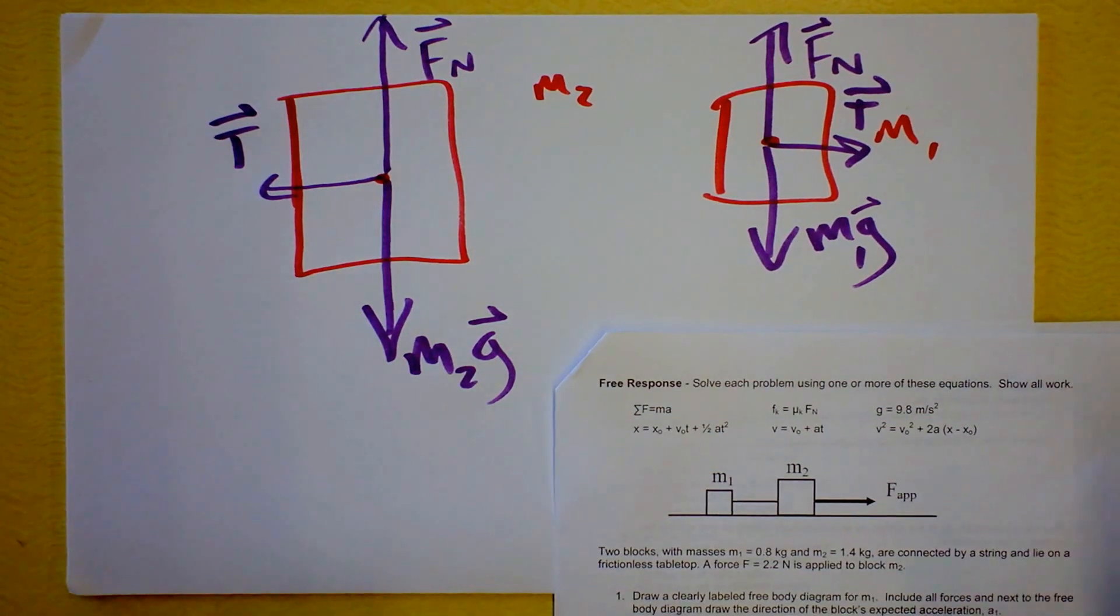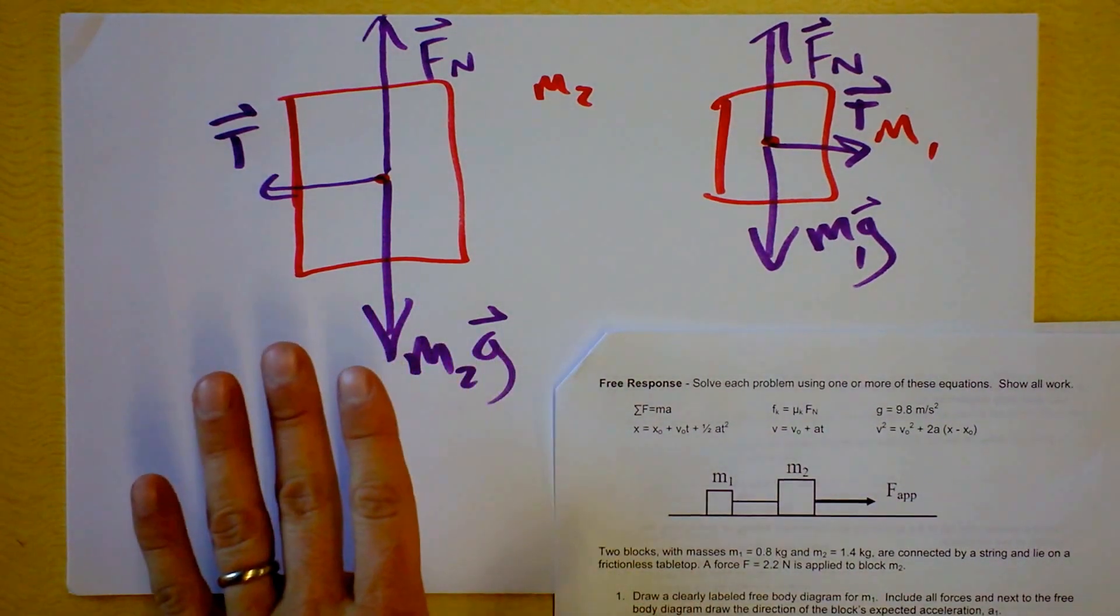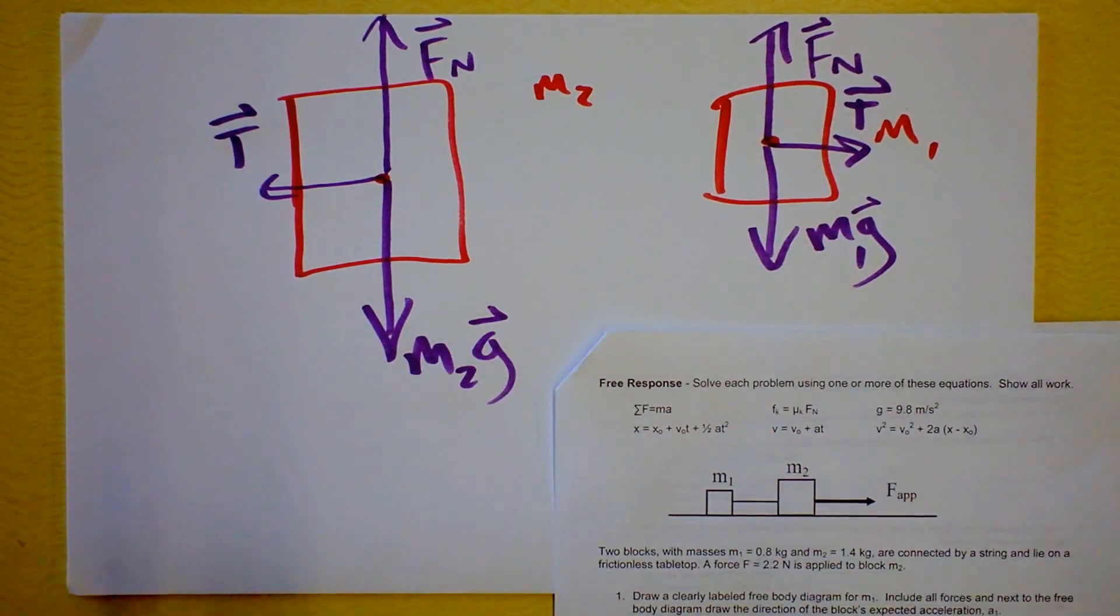So the other important thing is we're going to get to situations in which tension is not the same for a given string. If the string is doing something else in the middle, like it's rotating something, then it could be different. Or if there's a green flag. We have a very simple situation here in which the string is massless, not doing anything, so the tension is the same between the two.